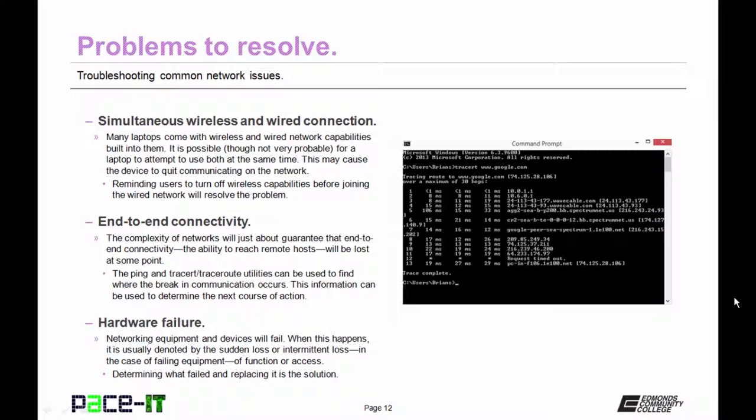Not having good end-to-end connectivity is another common problem. The complexity of networks will just about guarantee that end-to-end connectivity, the ability to reach remote hosts, will be lost at some point. The ping and tracer utilities can be used to find where the break in communication occurs. This information can then be used to determine the next course of action.